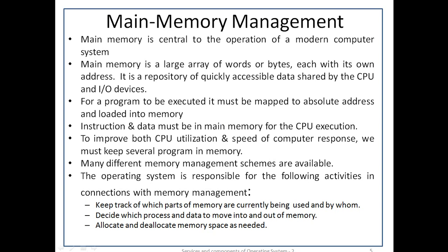Main memory is central to the operation of a modern computer system. It is the repository of quickly accessible data shared by the CPU and I/O devices. The CPU reads instructions and data from main memory during the instruction fetch and data fetch cycles. I/O operations implemented via DMA — direct memory access — read and write data in main memory. The CPU is able to address and access memory directly.